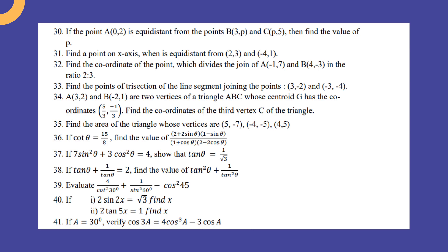Find the area of the triangle whose vertices are (5, -7), (-4, -5), (4, 5).